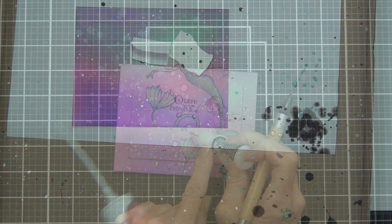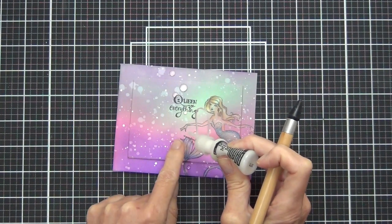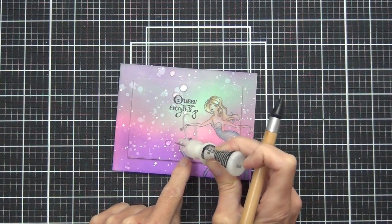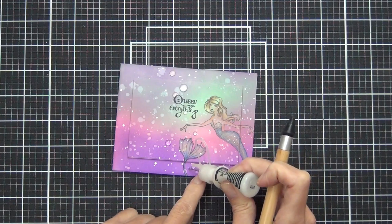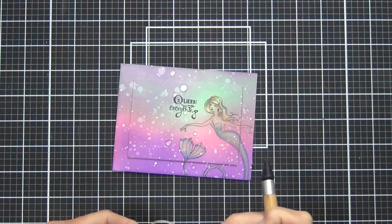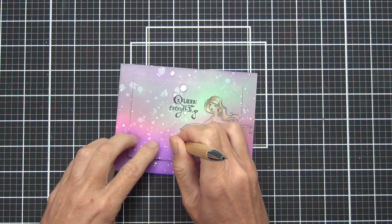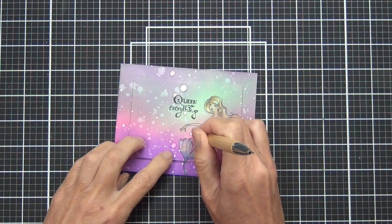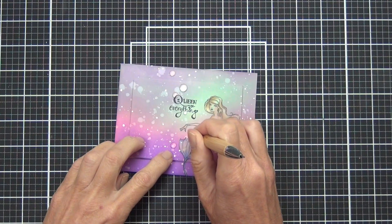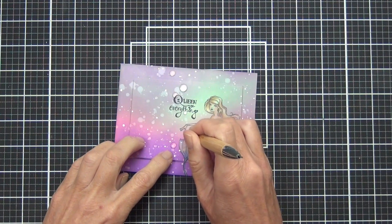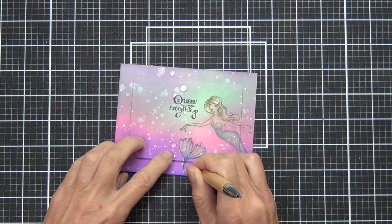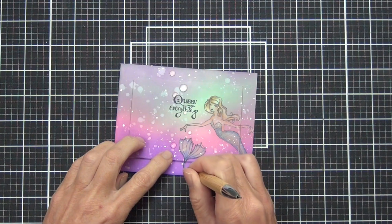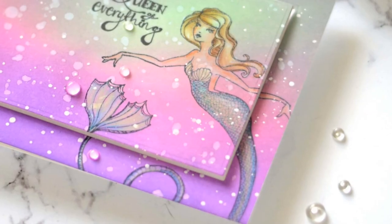I have added some white splatters here and I do like to protect portions of my image. The sentiment comes from a set called Queen of Everything, and that's exactly what it says. Then all I had to do was add a few droplet gemstones. I think these work really well with my underwater splashy scene.